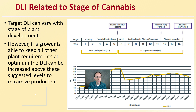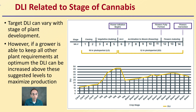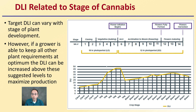The target DLI can vary with the stage of plant development. However, if a grower is able to keep all other plant requirements at the optimum, the DLI can be increased above suggested levels to maximize production. You want a little bit less light on clones or newly emerged seedlings and increase it as growth progresses. But if you want to maximize production, use these levels as a minimum — you can always increase them, assuming all other plant requirements are at optimum.